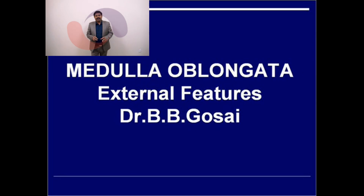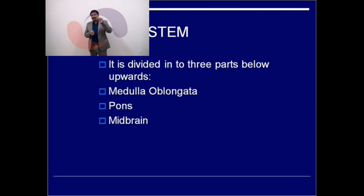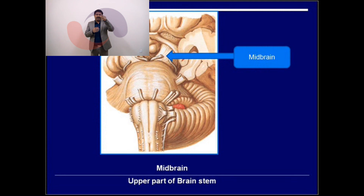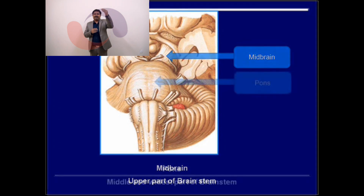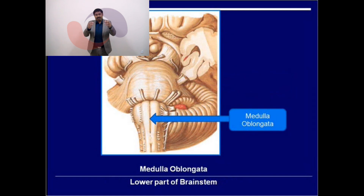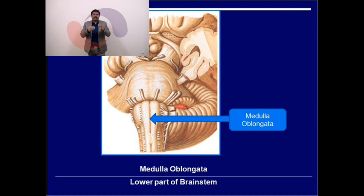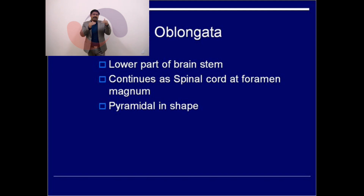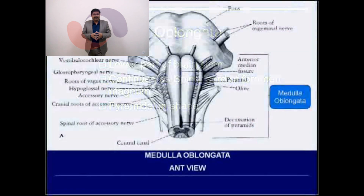Today we will discuss the features of the medulla oblongata. The brainstem is divided into three parts: the upper part is the midbrain, which connects to the cerebrum; the middle and widest part is the pons, which connects via the middle cerebellar peduncle to the cerebellum; and the lower part is the medulla oblongata, which is pyramidal in shape and continues as the spinal cord at the level of the foramen magnum.